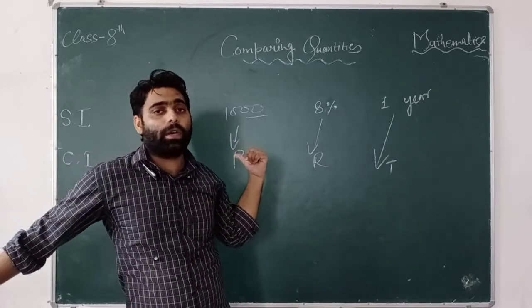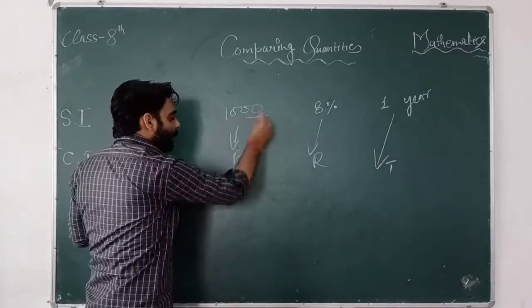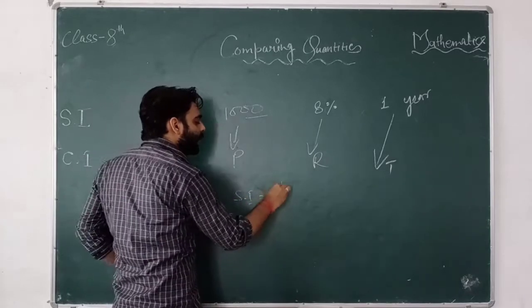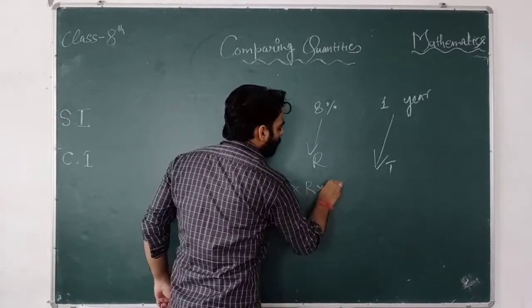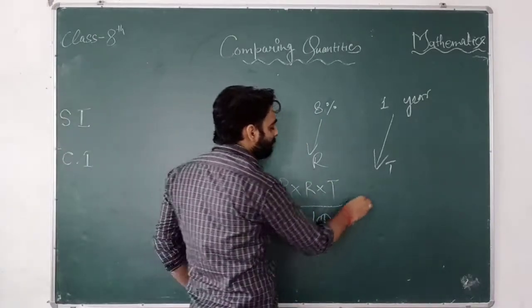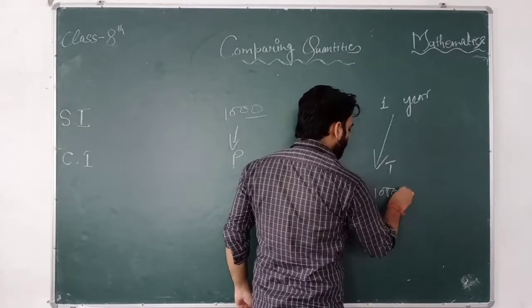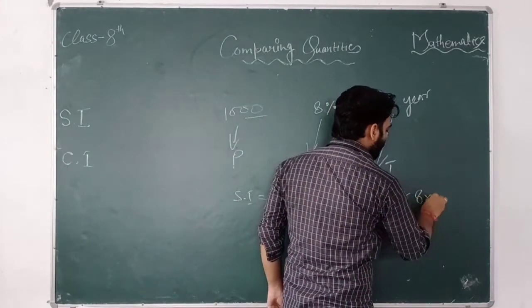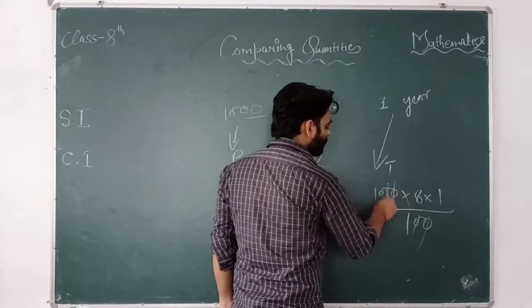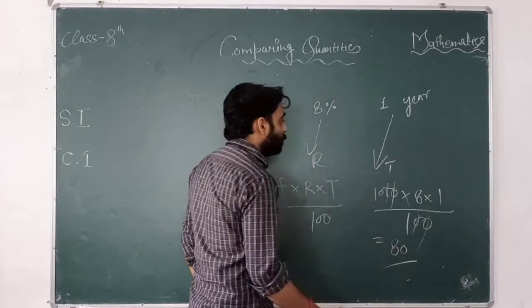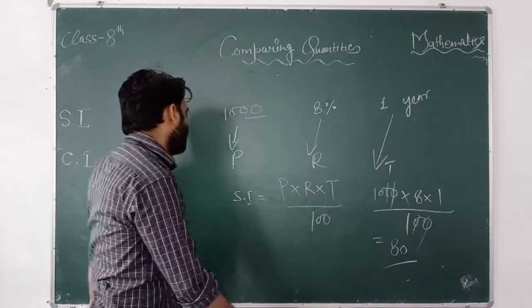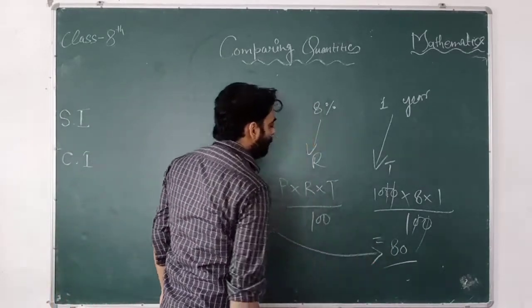For compound interest, we look at the amount. If you apply the simple interest formula: P into R into T upon 100 — that is, principal 1000, rate 8, time 1, divided by 100 — the simple interest comes out to 80 rupees.